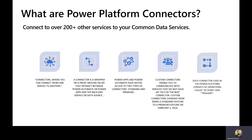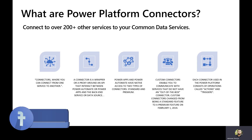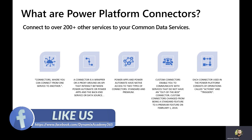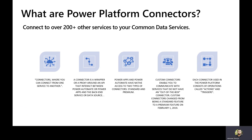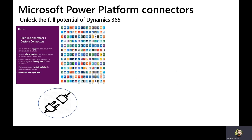Each of these connectors used in Power Platform consists of operations called actions and triggers. There are basically two components associated with a Power Platform connector: actions and triggers. Actions are what you want to perform using that connector, and triggers are the conditions on which you want those actions to be performed.